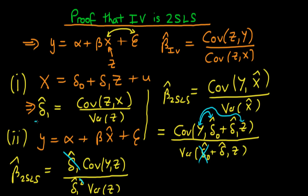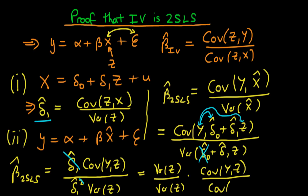We have an explicit form of δ̂₁ from the first stage, so substituting it in: β̂_2SLS equals the variance of z divided by the variance of z, times the covariance of y with z divided by the covariance of x with z. The two variance terms cancel, and this is exactly the same form as β̂_IV. We conclude that β̂_2SLS is equivalent to β̂_IV. Note this was done using population quantities, but in principle the process would be exactly the same with the sample form.